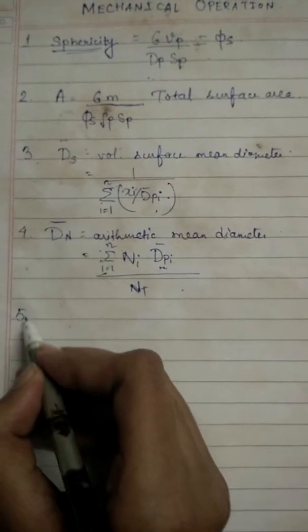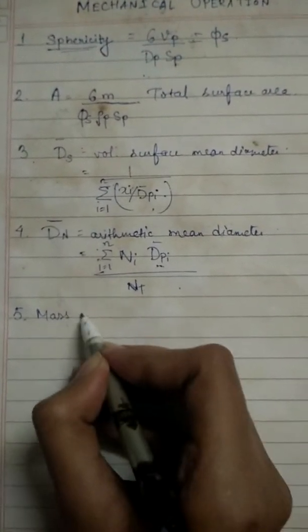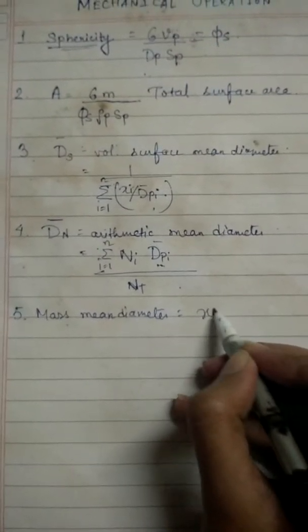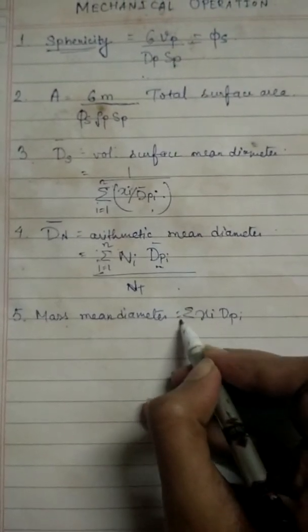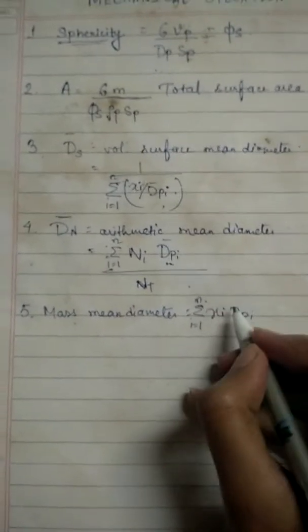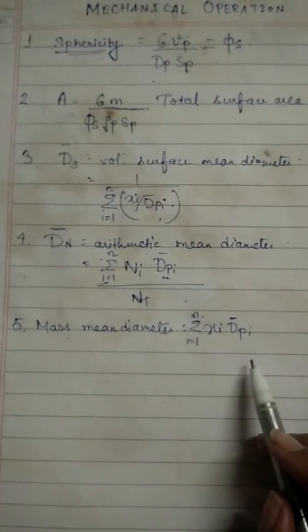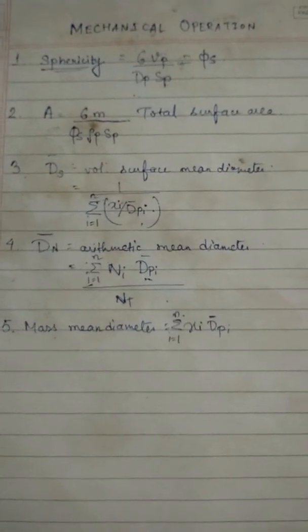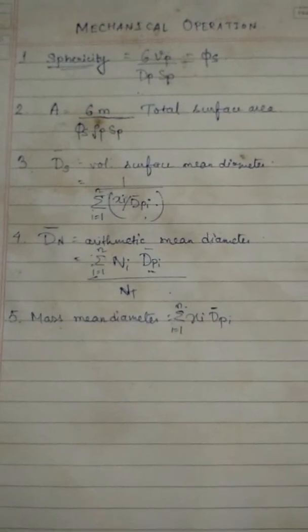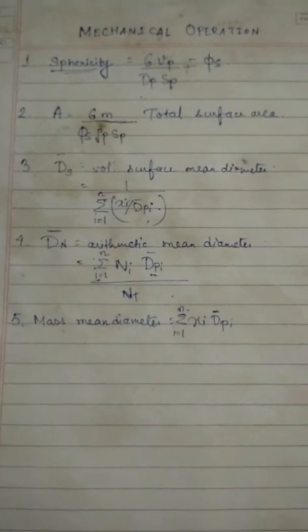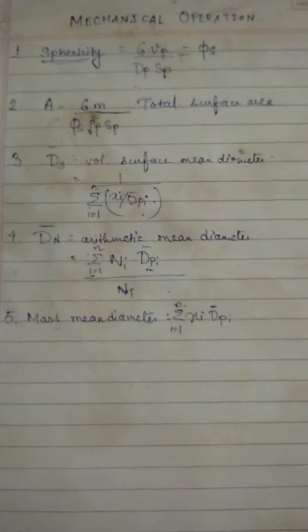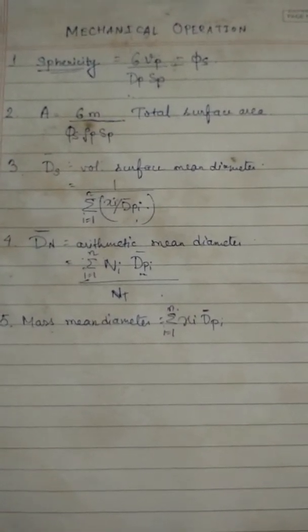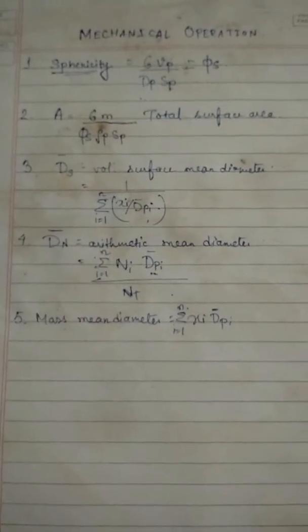Next up we have mass mean diameter. Mass mean diameter is given simply by summation xi into dpi where i is from 1 to N. XI is again the mass fraction and dpi or d bar pi is the equivalent diameter of ith particle. So these are the formulas that you will require mainly when you are dealing with diameter of the particle relating to the shape of the particle, that is the sphericity, and to the area occupied by it. In the next video we will talk about more such formulas. Thank you.